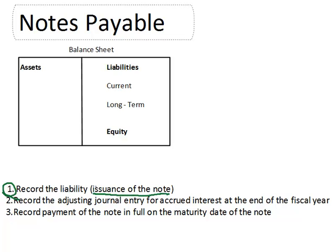Let's first talk a little bit about what a note payable is. A note payable is found on the balance sheet. The balance sheet tells us what we have — those are the assets, such as cash, equipment, and building — all of the things that a corporation owns or has direct control over.